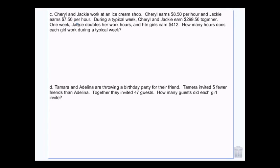Cheryl earns $8.50 an hour, and Jackie earns $7.50 an hour. During a typical week, Cheryl and Jackie earn $299.50 together. So, normally, if Cheryl is at $8.50 an hour, and Jackie is at $7.50 an hour, they are earning $299.50 a week. One week, Jackie doubles her work hours. Cheryl stays the same, but Jackie's doubles. So, her hourly rate stays the same, but she ends up working twice as many hours, so we are going to throw a 2 in there. And they earn $412.00.